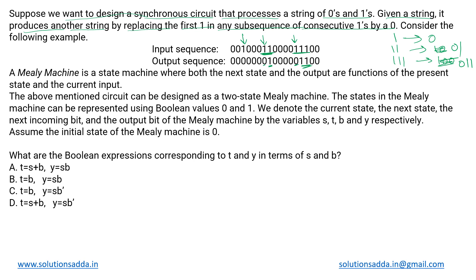So the modification we have to do using finite automata: we have to find a subsequence of consecutive ones, then replace the first one in that with a zero and leave the rest the same. For performing such an operation, a Mealy machine has to be designed. It is a state machine where both the next state and the output are functions of the present state and the current input — that is the definition of a Mealy machine.